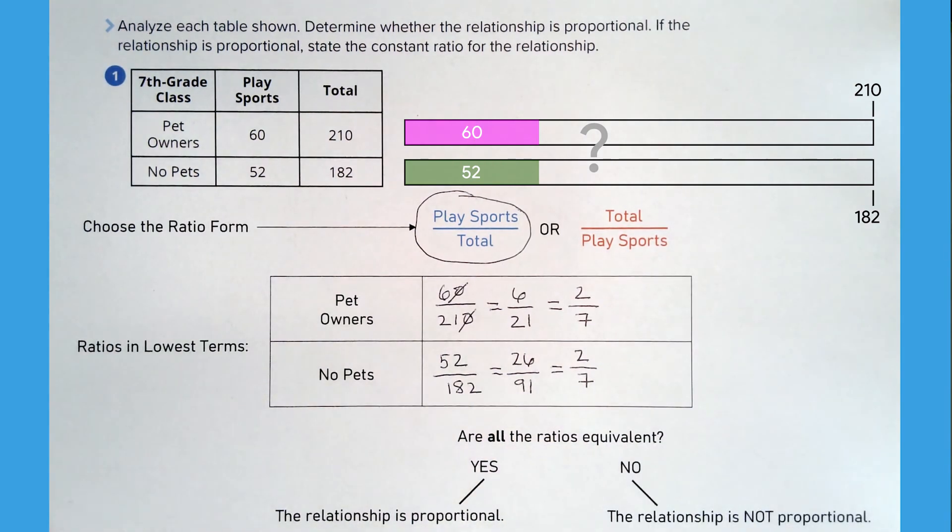Now we answer the question: are all the ratios equivalent? Since both ratios are 2 to 7, yes, they are equivalent.